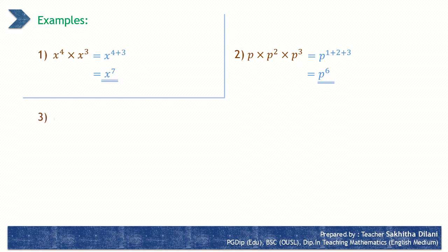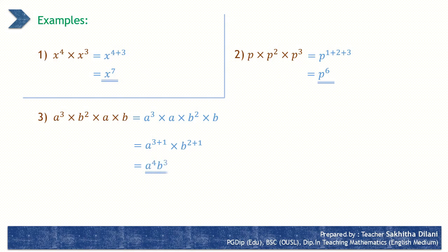Let's see another example: a to the power 3 into b to the power 2 into a into b. First, it's better to write the powers with the same base together as a to the power 3 into a into b squared into b. In the first two terms, their bases are equal, so you can add their indices: a to the power 3 plus 1. In the last two terms also, their bases are equal, so you can add their indices: b to the power 2 plus 1. After simplifying, the answer is a to the power 4, b to the power 3.